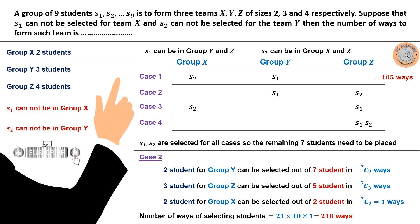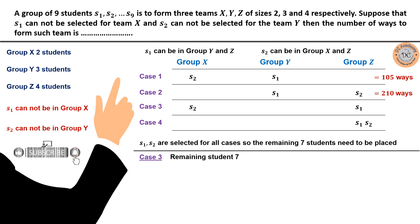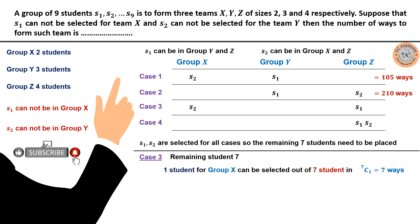For Case 3, S2 is in group X and S1 is in group Z, with seven remaining students. Group X already has S2 and needs two students, so one more student is needed; this can be chosen from seven remaining in 7C1 = 7 ways.